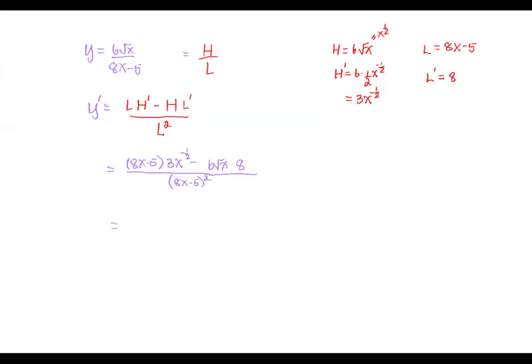Next, we are going to simplify. There are multiple ways to simplify this expression, especially the numerator. We'll leave the denominator as the quantity squared. We'll go the traditional way by distributing the 3x to the power negative 1 half to 8x minus 5, using the property of the product of two exponents: x to the power a times x to the power b equals x to the power a plus b.